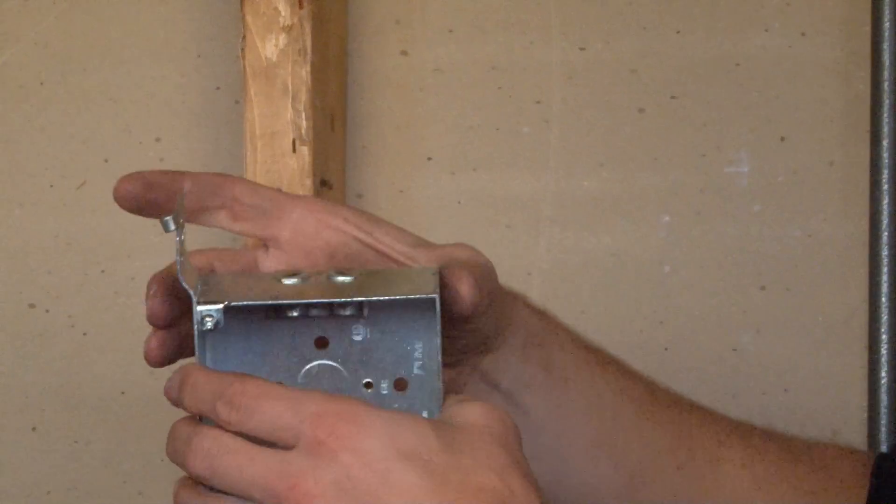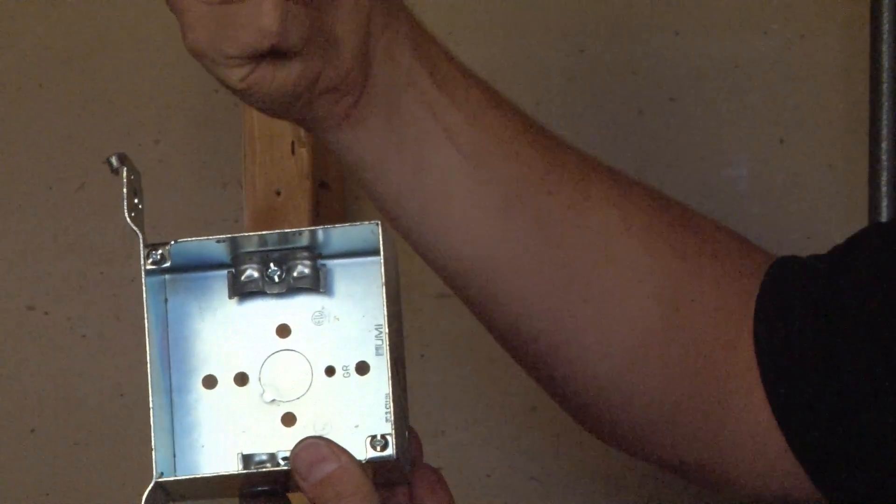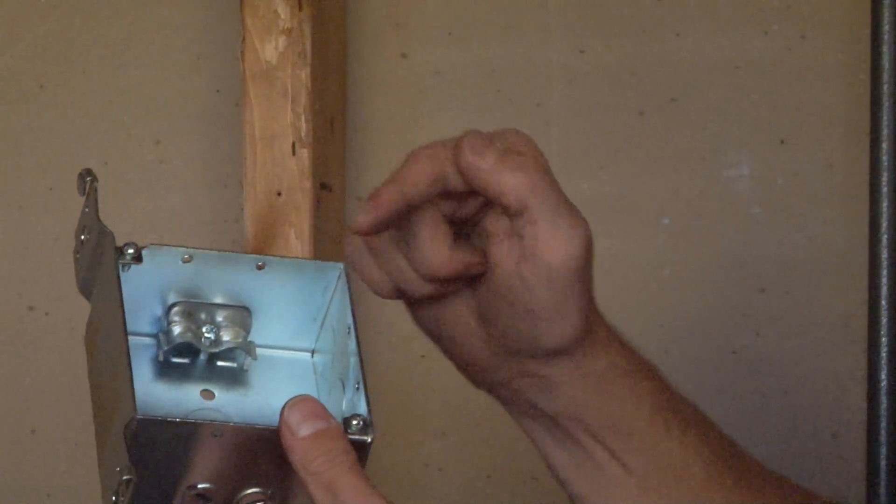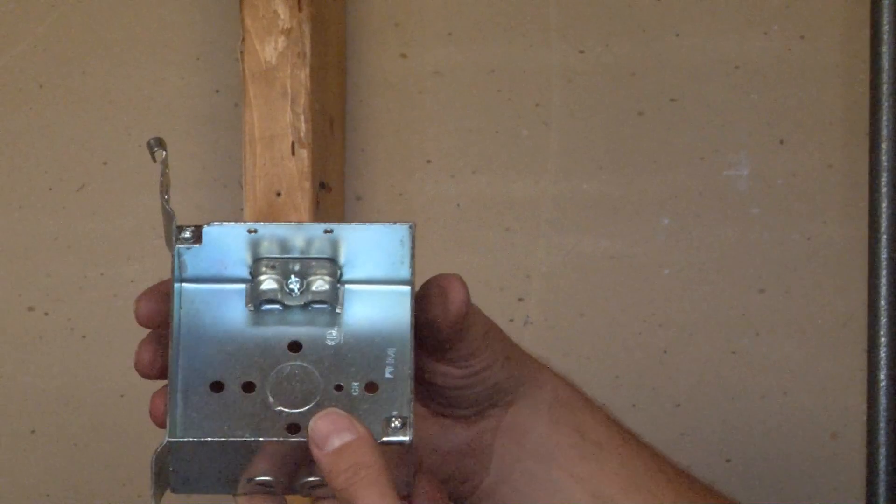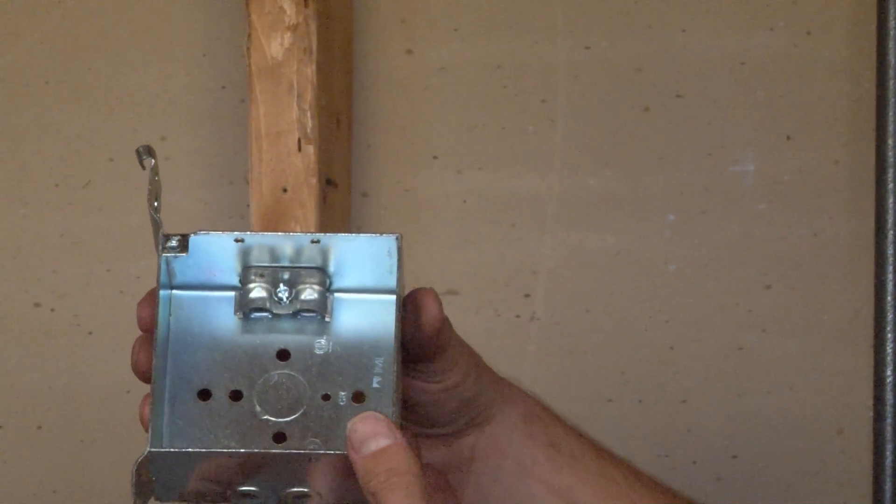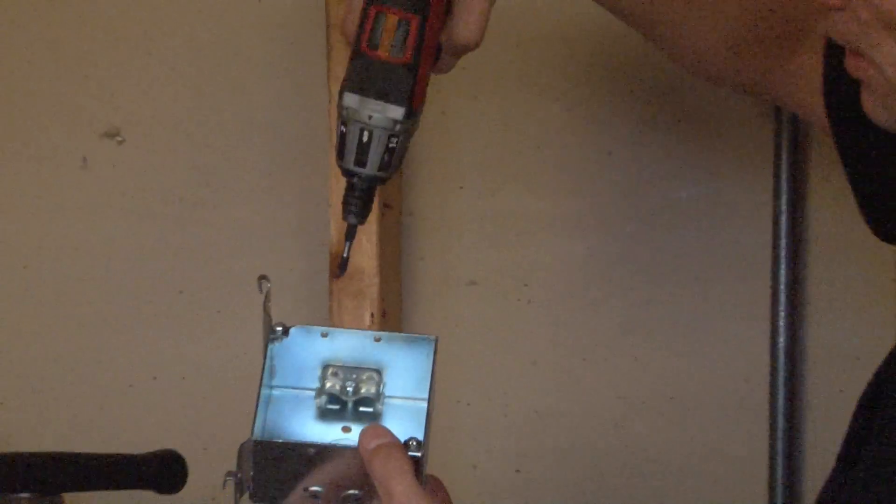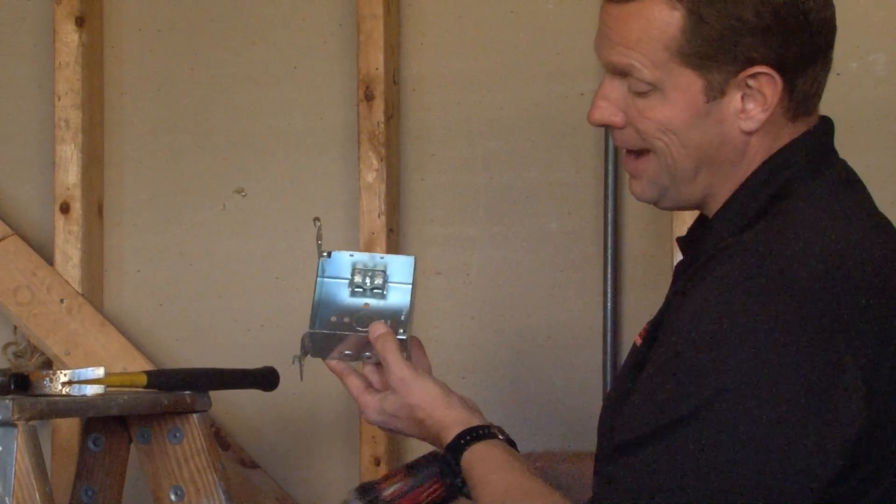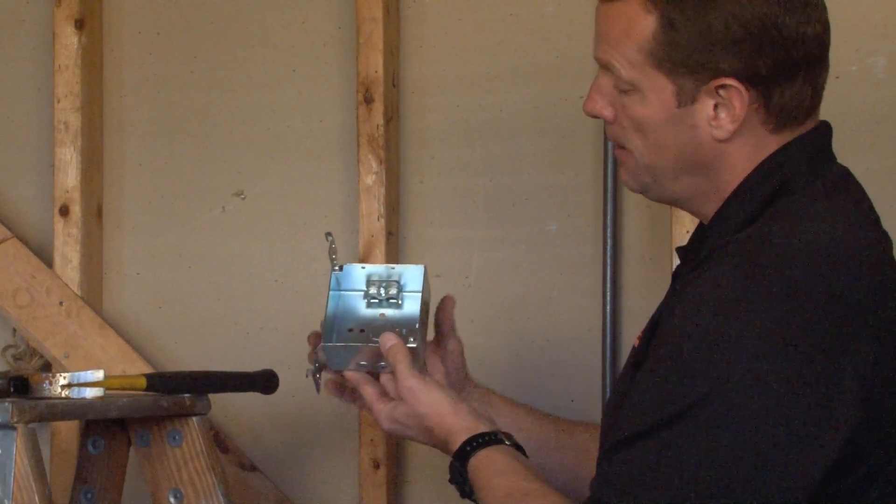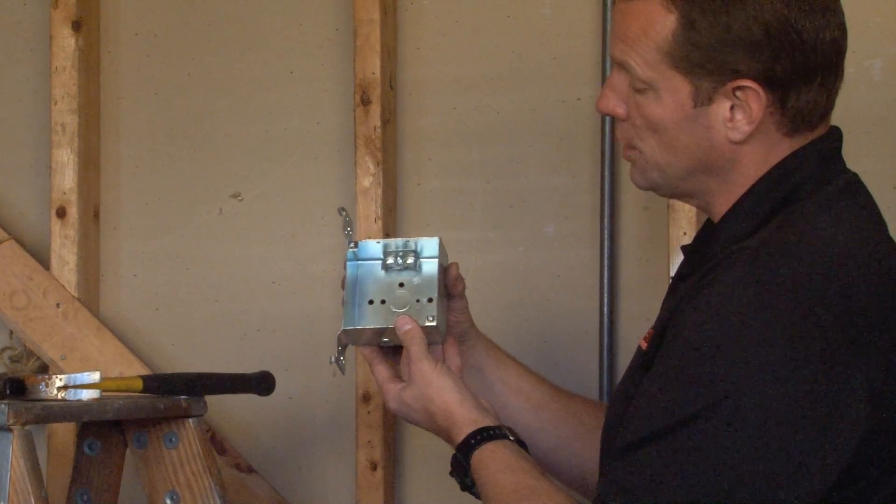Once the tab is removed, your non-metallic sheath cable is inserted into the hole and pulled right through the clamp in the bottom of the box. The installer can then screw down the clamp, thereby securing the cable in the bottom of the box so you don't need any external connectors.